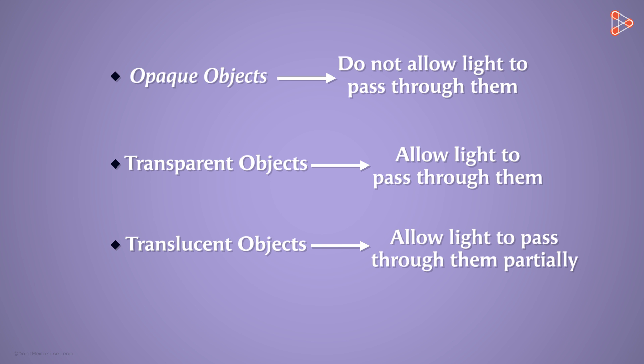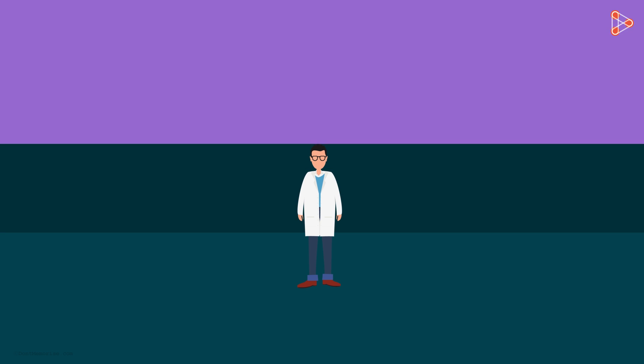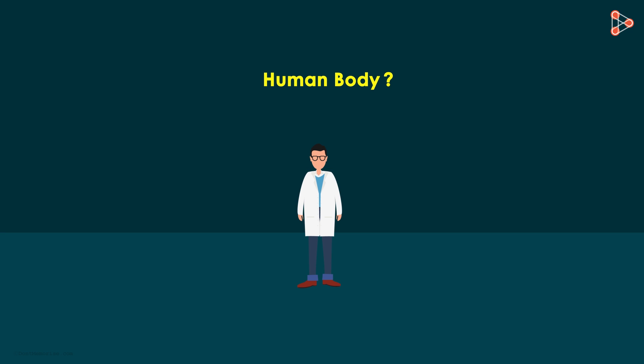Now I want you to answer this question. What kind of an object is a human body? Are we able to see through it? Not really. Hence a human body is an opaque object.